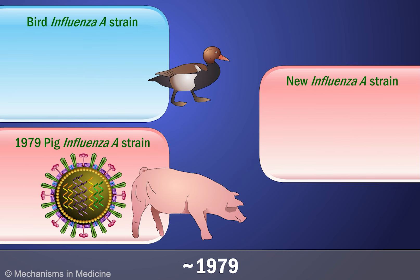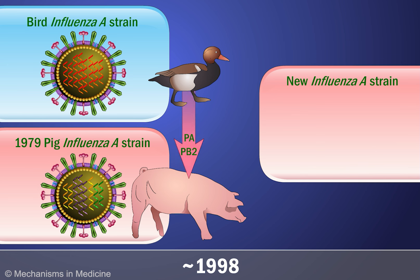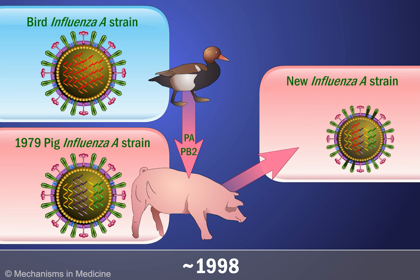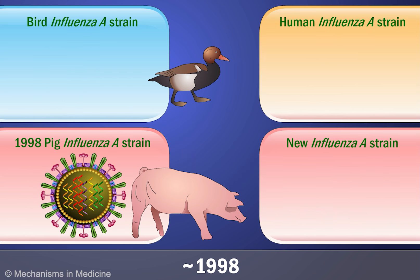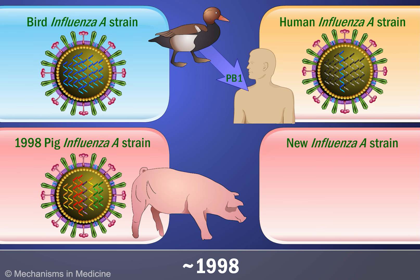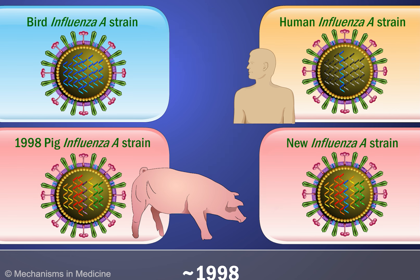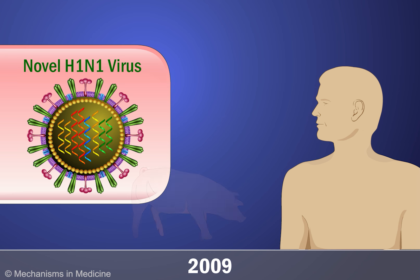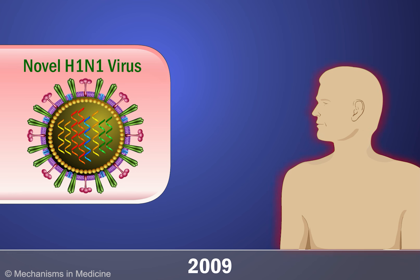Substantial antigenic shifts of viruses have occurred since 1979. For example, the polymerase acidic protein (PA) and polymerase basic protein 2 (PB2) segments from the bird strain re-assorted into a new strain which entered swine in North America around 1998. Around the same time, the polymerase basic protein 1 (PB1) gene segment migrated to a swine strain from humans, having originated from birds around 1968. Evolution via the combination of various antigenic shifts resulted in the novel H1N1 transmitted to humans in 2009.